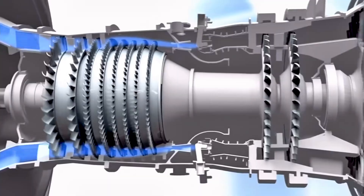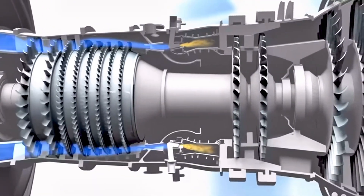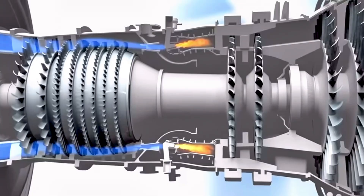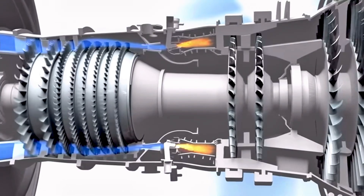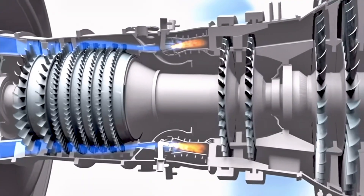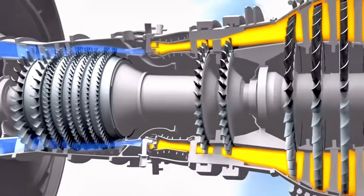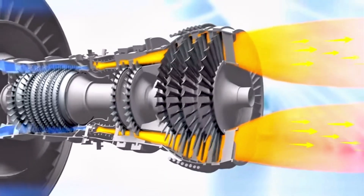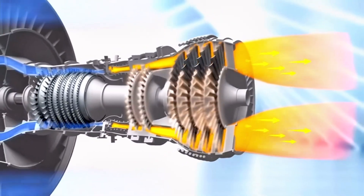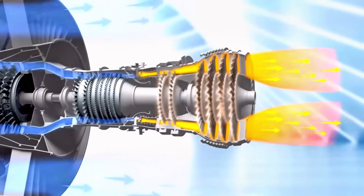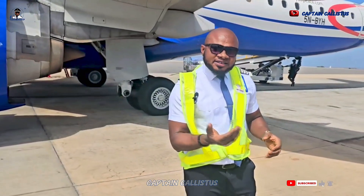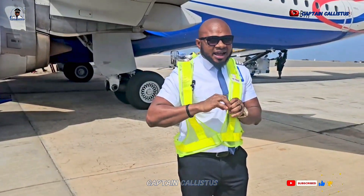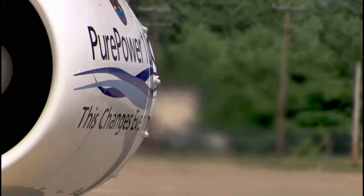Inside that combustion chamber, that is where the fuel injector will launch in fuel and ignition will take place. When that ignition takes place — just like when you see an explosion of gas, or a burning fire, and you're adding more fuel — an explosion will happen. As that explosion is happening, it goes through the exhaust pipe, giving the aircraft enough thrust to push forward. That is how we get the thrust to move the aircraft.